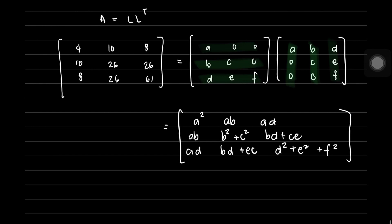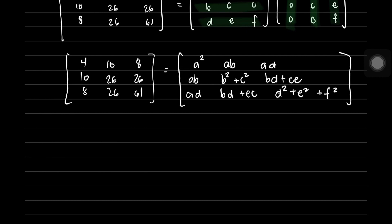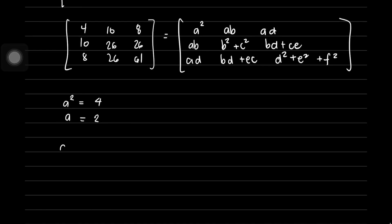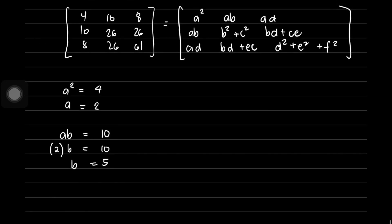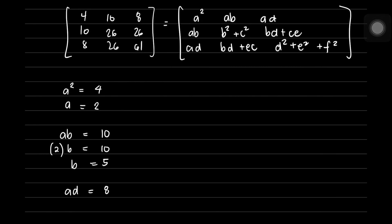Equating elements: A² = 4, so A = 2. Next, A·B = 10; since A = 2, we get 2·B = 10, therefore B = 5. We can also solve for D: A·D = 8; since A = 2, we get 2·D = 8, therefore D = 4.